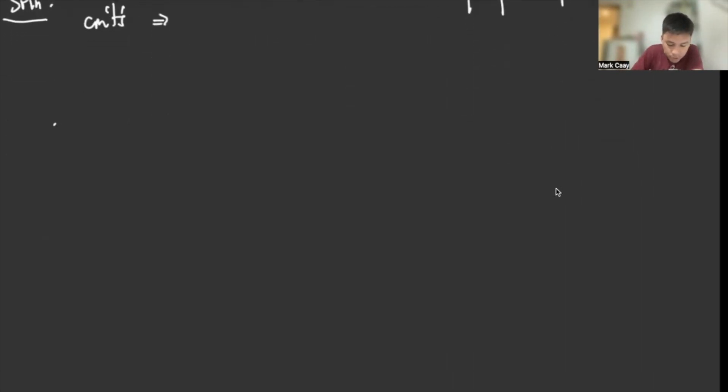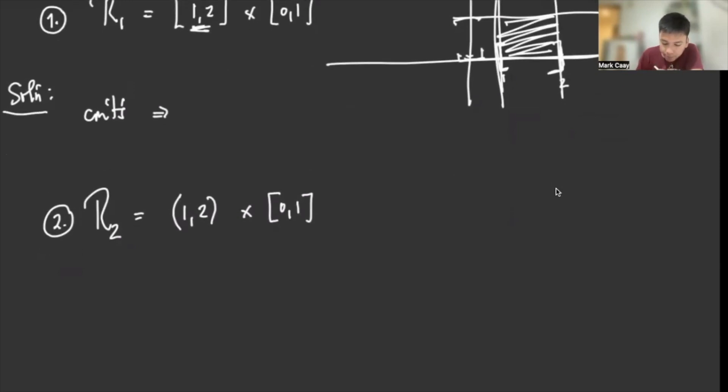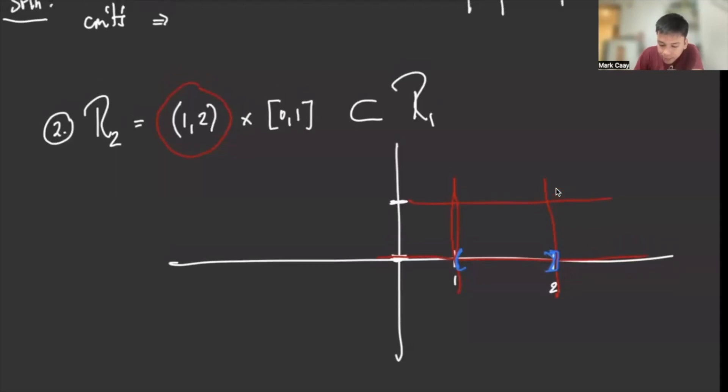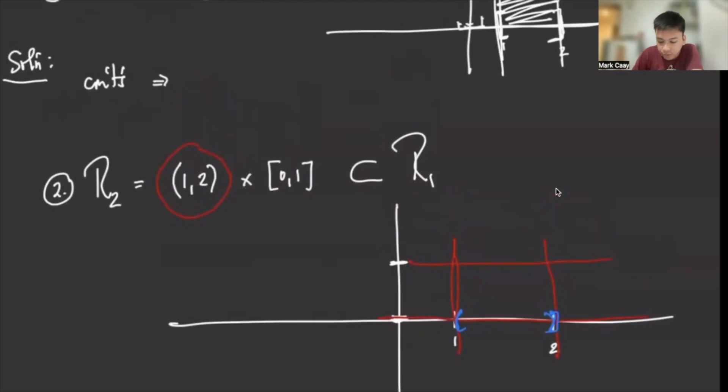Okay, let's try region 2. So let's say region 2 is (1,2) × [0,1]. What does it mean? This is open. So ibig sabihin, this is the region, it's not closed. So which means our R2 is a subset of R1. So since we said that this equation satisfies the Lipschitz on the region of R1, this also satisfies on the region of R2.